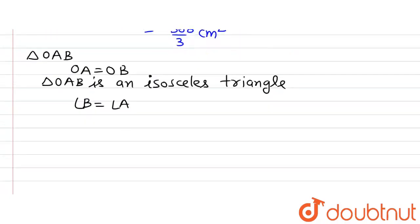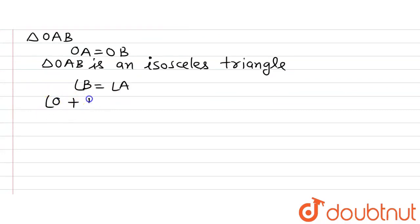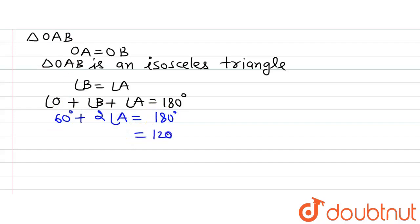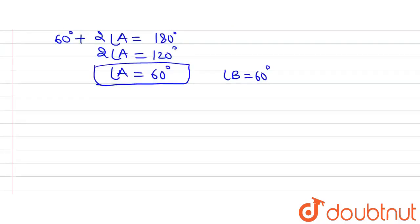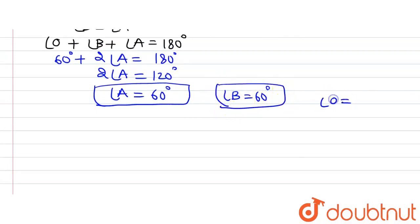Angle O is 60 degrees. Applying the angle sum property to triangle OAB: angle O + angle B + angle A = 180°. Since angle B equals angle A, we get 60° + 2×(angle A) = 180°, so 2×(angle A) = 120°, giving angle A = 60°. Thus angle A = angle B = angle O = 60°.